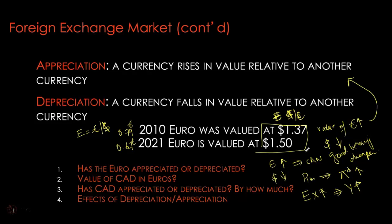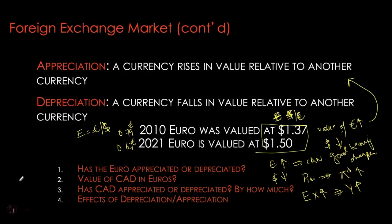The exact opposite will happen in the other economy — let's assume it's France, using the euro as its domestic currency. For the French, Canadian goods are becoming cheaper, so their imports are now cheaper, feeding into reduced inflationary pressures. Whereas their own goods are now more expensive for foreigners — for Canadians — causing their net exports to decline, which can have a negative impact on their real GDP.